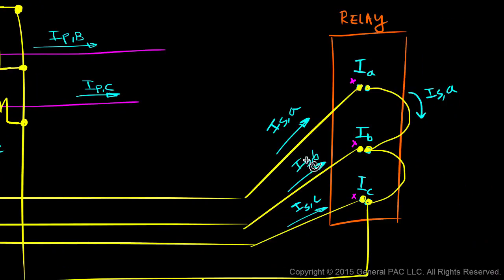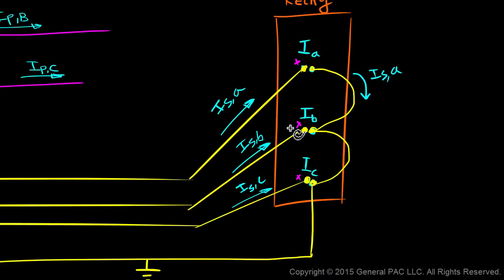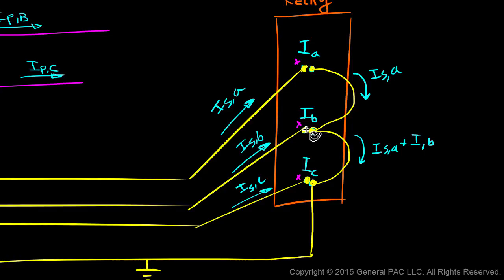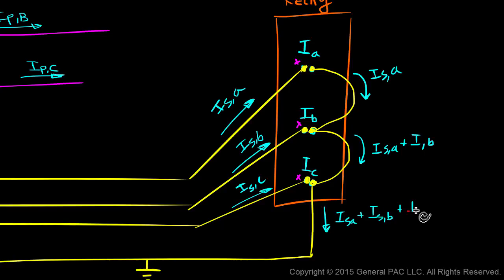Let's zoom in to get a better look. What goes into the polarity-mark input terminal for phase B is essentially the secondary phase B current. But what comes out of the non-polarity side is essentially phase A current plus phase B current. Phase B current flows into the polarity side of the input terminal, and phase A current flows into the non-polarity side. What comes out is the sum of what goes in: phase A plus phase B current. Similarly for phase C, what comes out is the secondary phase A current plus secondary phase B current plus secondary phase C current — the sum of what goes in.